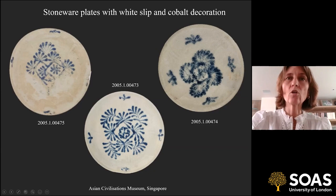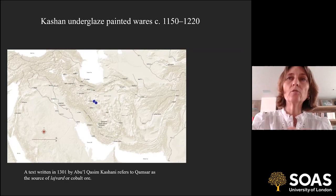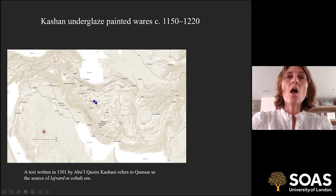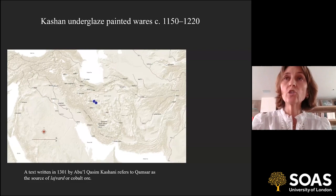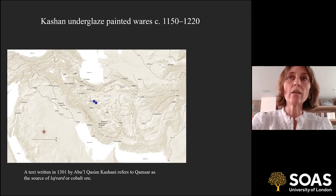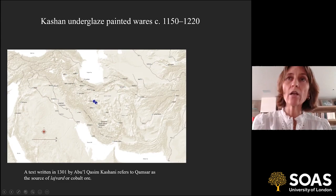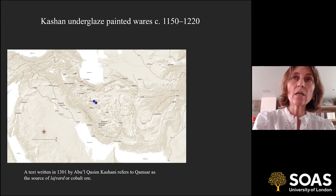We're going to leave Basra and move to Kashan in central Iran. Kashan is right in the center of Iran; the second blue dot is Kamsa, the source of the cobalt ore. We know this from a text written in 1301 by Abulqasim Kashani, fourth generation of a distinguished family of potters in Kashan, who was also a bureaucrat working for the Mongol administration. He writes about technological aspects of ceramics production and refers to Kamsa as the source of cobalt. Tests of the Abbasid pieces show the same formula as this Kamsari cobalt.